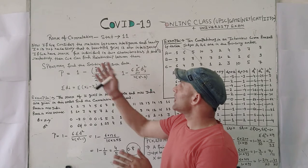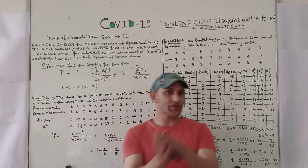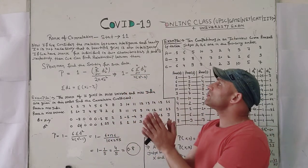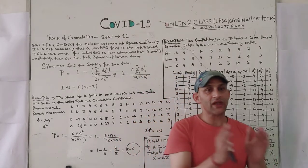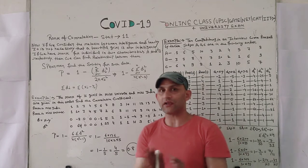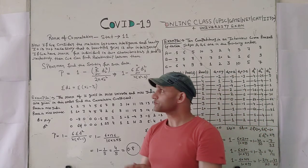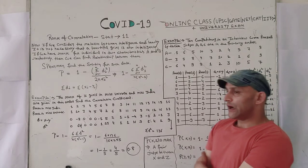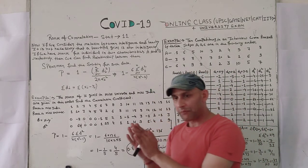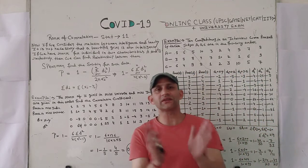Hi friends, this is lecture number 11. My request to everyone: please go through the previous lecture before coming to this one, because all the lectures are linked and related to each other. Today we will discuss the rank of correlation. We have already given you the best knowledge about correlation — what it is and its usage in real life. All research holders, marketing professionals, PhD holders, MBA, BBA, MCA — all departments use correlation.